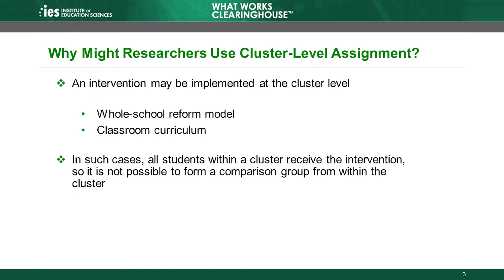There are many reasons a researcher might assign clusters to conditions rather than individuals, such as students. For example, the intervention may be implemented at the cluster level, such as a whole school reform model or a classroom curriculum. In such cases, all students within a cluster receive the intervention, so it is not possible to form a comparison group from within the cluster.